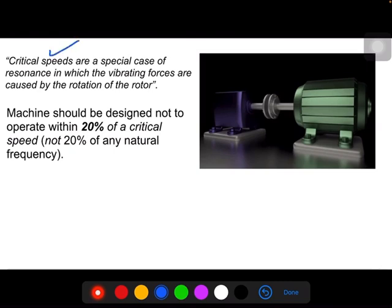One more important parameter, that is critical speed. Critical speeds are a special case of resonance in which the vibrating forces are caused by the rotation of the rotor. If the machine runs at that frequency, you call it critical speed. Each motor or any rotating component has some critical speed. The original equipment manufacturer mentions the equipment critical speed.